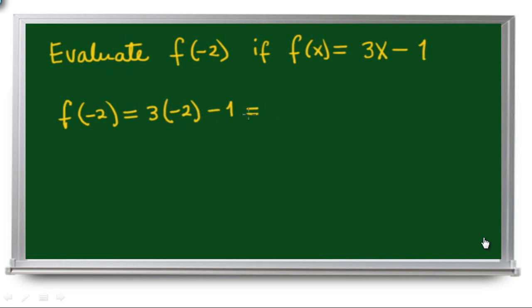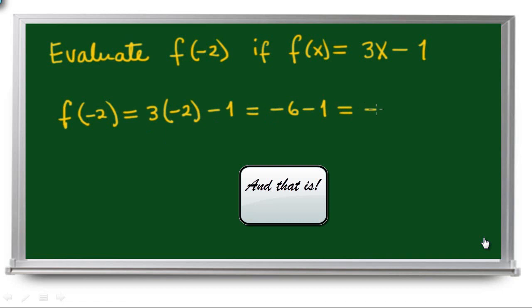And you apply the order of operations: it's negative 6 minus 1, and that's negative 7. The answer is negative 7. That's it.